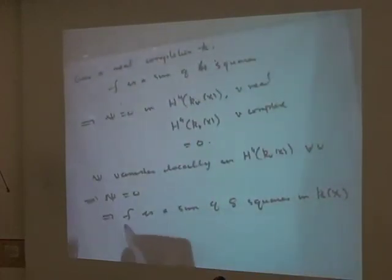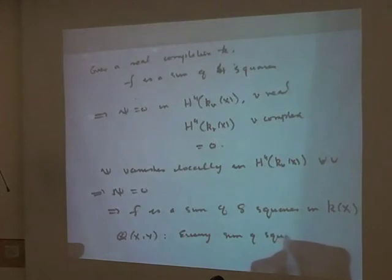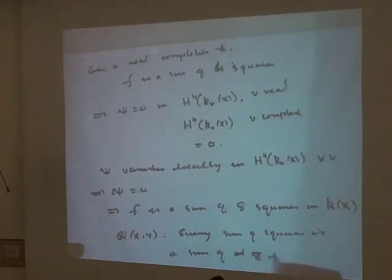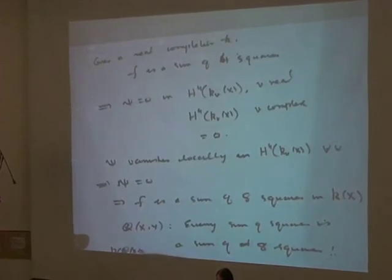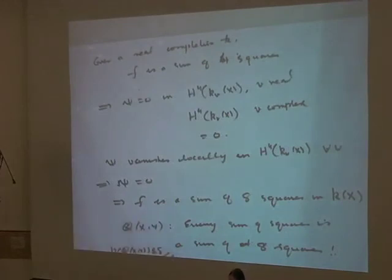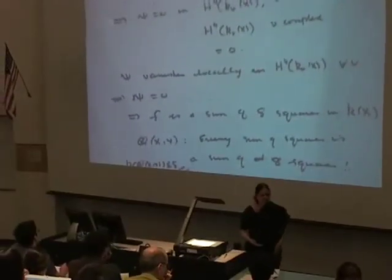In particular, if you take Q(x, y) — the rational function field in two variables over Q — then every sum of squares is a sum of at most 8 squares, so p(Q(x,y)) ≤ 8. This is I think the best known bound concerning this field. For three variables, whether Kato's conjecture is true is still open, so we'd like to say thank you.